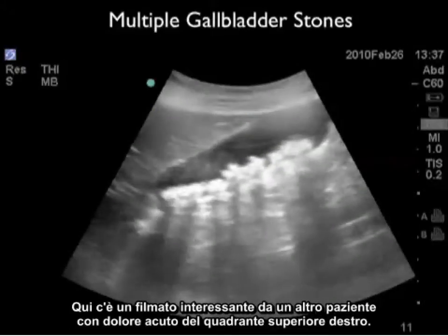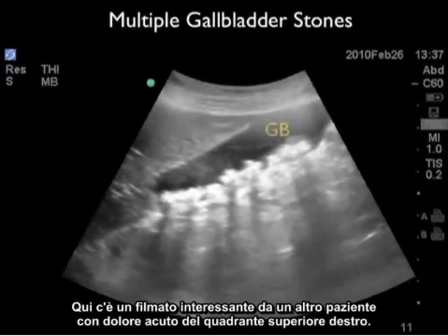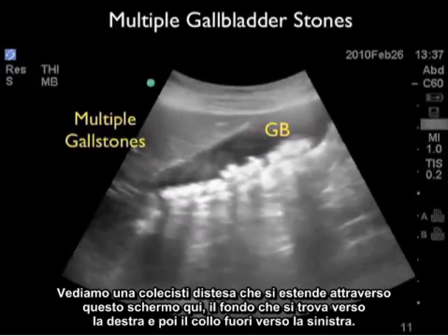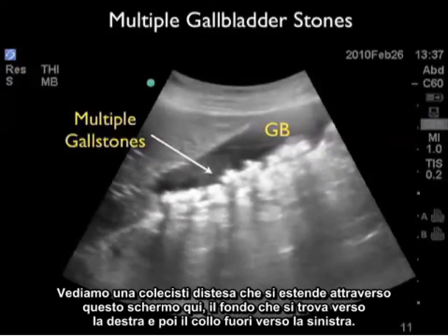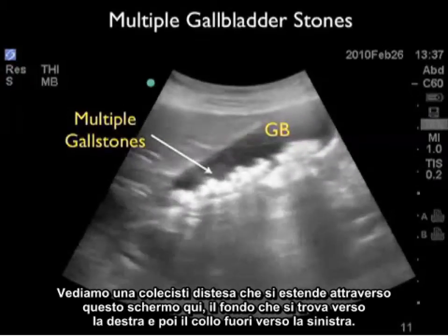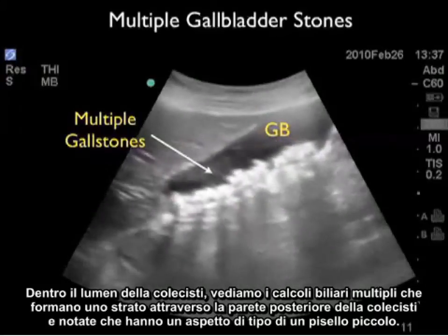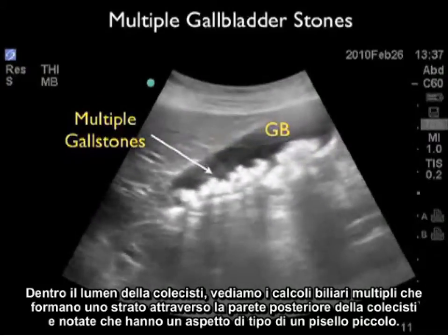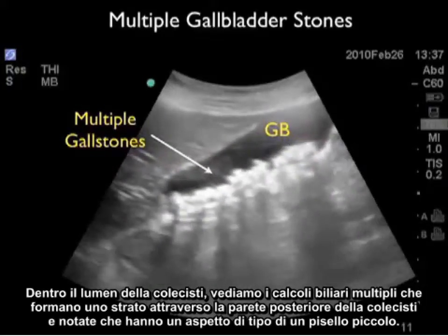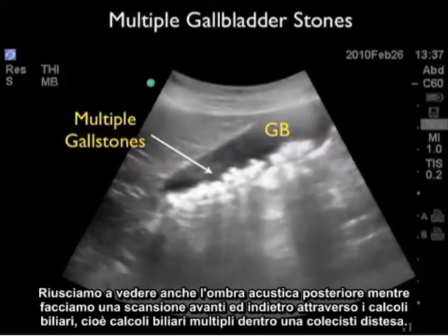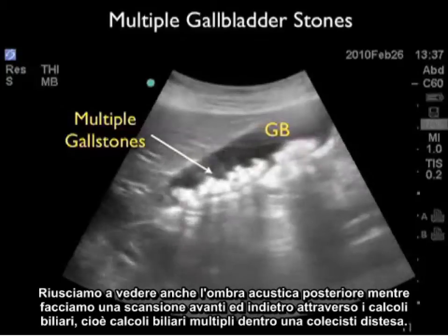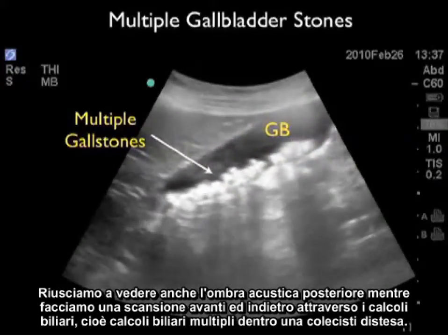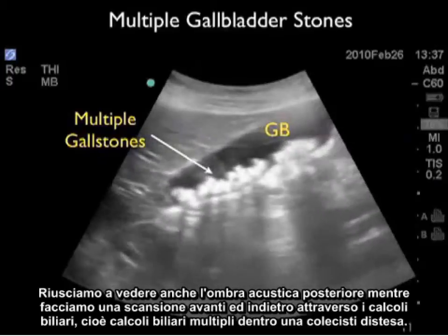Here's an interesting video clip from another patient with acute right upper quadrant pain. We see a distended gallbladder stretching across the screen, with the fundus towards the right and the neck towards the left. Within the lumen, multiple gallstones layer across the back wall with an almost small pea-like appearance. We can also see the posterior acoustic shadowing as we scan back and forth — multiple gallstones within a distended gallbladder.